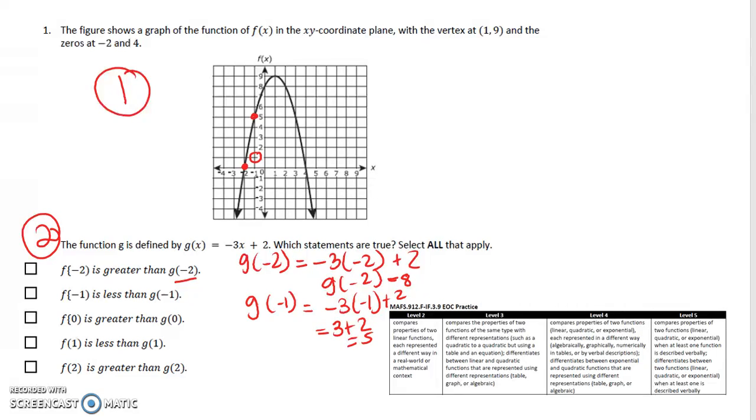f(0), so f(0) would be here at 8, is greater than g(0). So we're going to plug in g(0). g(0) is equal to 2. That one is finally true.